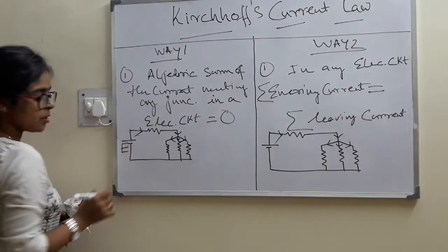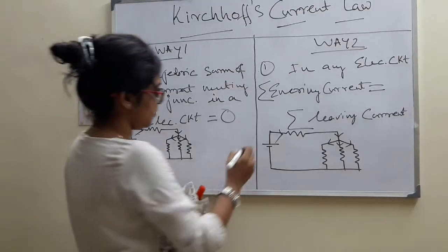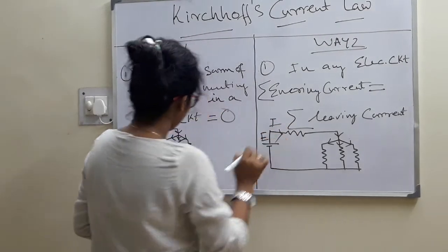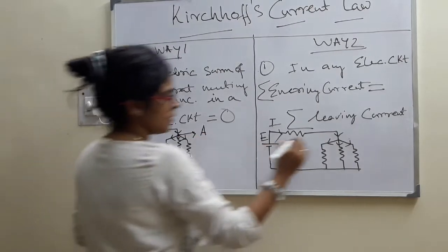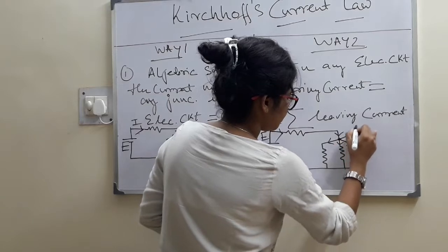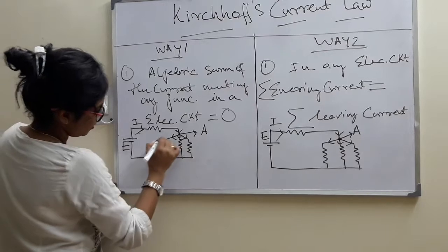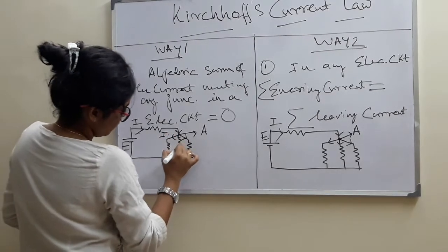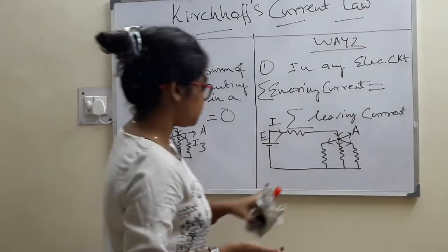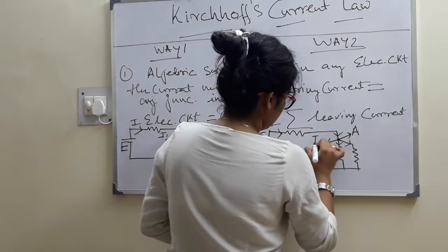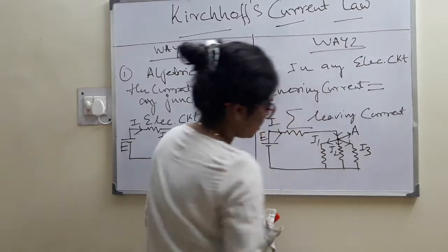Say this is the source E. This is the current I leaving from the source. From this junction — I am naming this junction as A — from the first branch, the current flowing is I1; from the second branch, I2; and from the third branch, I3. The same labeling applies to the second circuit diagram: I1, I2, and I3 current is flowing.